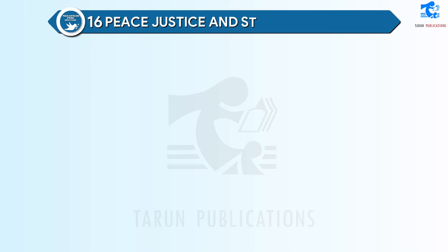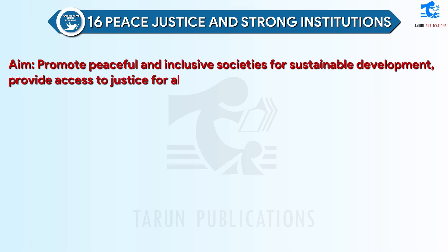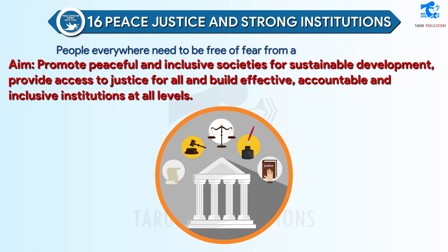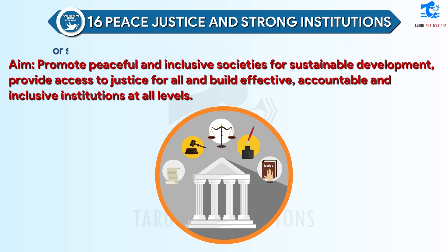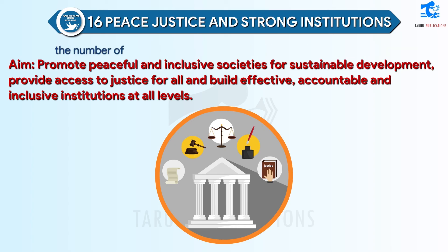SDG 16: Peace, Justice and Strong Institutions. Aim: promote peaceful and inclusive societies for sustainable development, provide access to justice for all and build effective, accountable, and inclusive institutions at all levels. People everywhere need to be free of fear from all forms of violence and feel safe as they go about their lives, whatever their ethnicity, faith or sexual orientation. Conflict, insecurity, weak institutions, and limited access to justice remain threats to sustainable development. In 2019, the number of people fleeing war, persecution, and conflict exceeded 79.5 million, the highest level ever recorded.